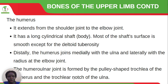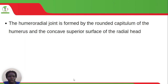Distally, the humerus joins medially with the ulna and laterally with the radius at the elbow joint. The humerus-ulna joint is formed by the pulley-shaped trochlea of the humerus and the trochlear notch of the ulna. The humerus-radius joint is formed by the rounded capitulum of the humerus and the concave superior surface of the radial head.